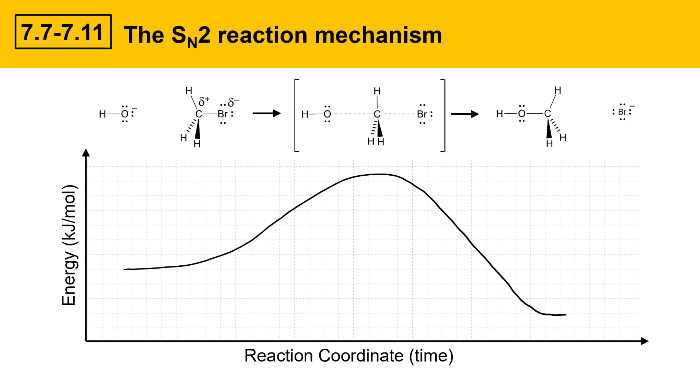So we can draw a graph that indicates the changes in energy of the species over time. Over here on the left side, this point would represent the starting material, so the energies of the nucleophile and the alkyl halide. This point right here lists the energy of the transition state, and notice how that's at the height, at the top of this hump. And then over here on the right side at the bottom, this represents the energy of the substitution product and the leaving group.